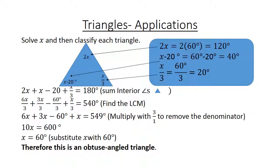Therefore, it's an obtuse angle triangle because 2X equals 120 degrees.